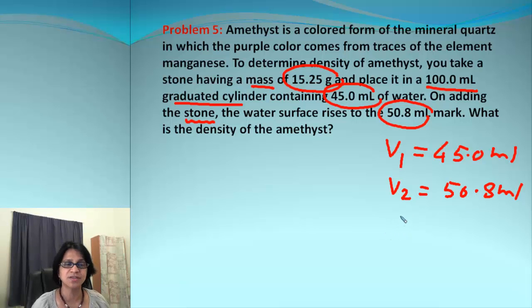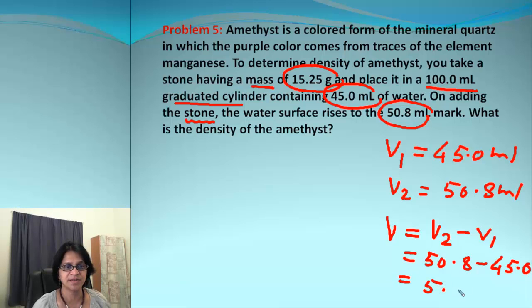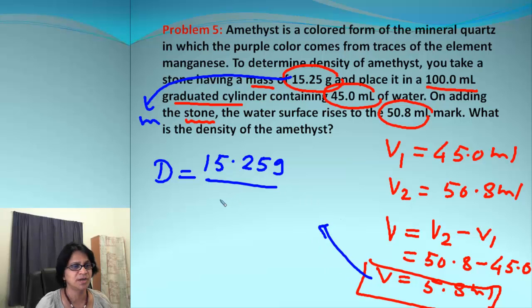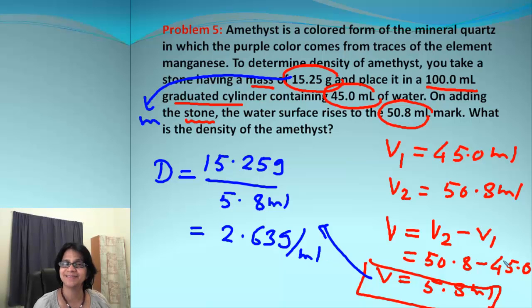We know the principle of displacement of water. If you immerse a solid in liquid, it's going to displace the equal volume of water. The volume of the stone will be V2 minus V1, which is 50.8 minus 45.0, giving 5.8 milliliters. Then density will be mass, 15.25 grams, divided by volume, 5.8 milliliters, which equals 2.63 grams per milliliter.